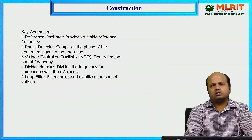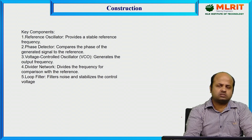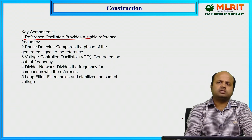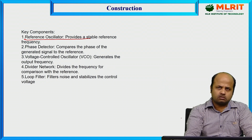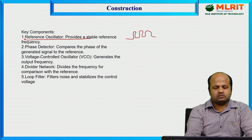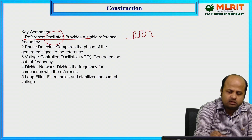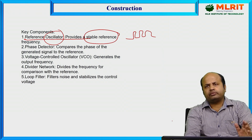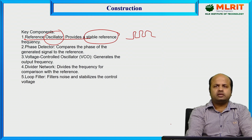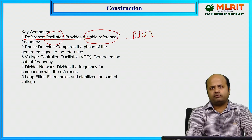What are the key components of a frequency synthesizer, and how is it constructed? First, we need a reference oscillator. The oscillator is a circuit that generates a continuous sine wave or square wave of a fixed frequency. This reference oscillator provides a stable reference frequency to the frequency synthesizer.